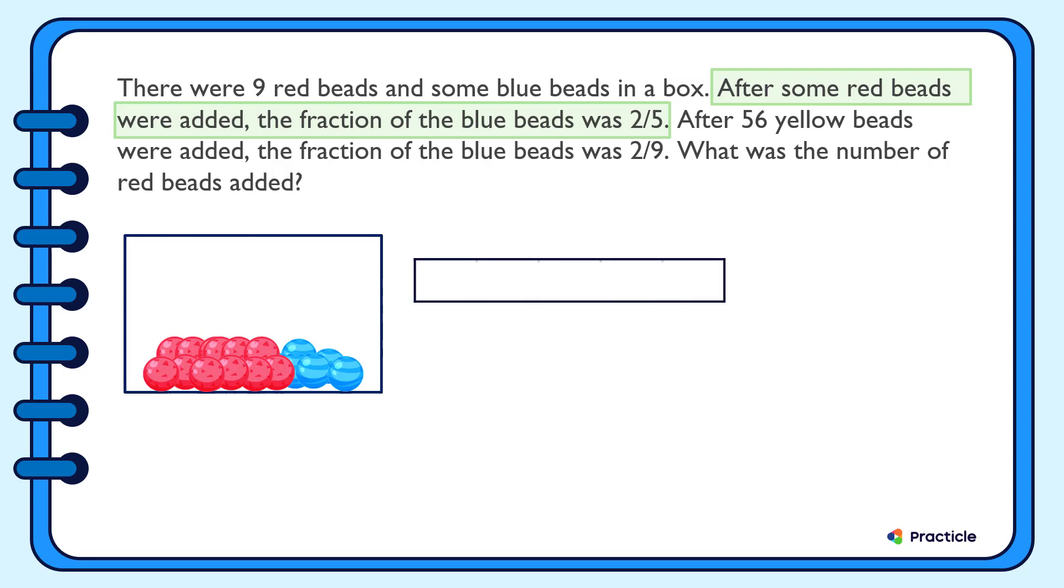Here are five units to represent the total number of red and blue beads. Let's label two of these units as blue beads. And this means that the rest of these units, these three units, must represent the red beads. So far so good?